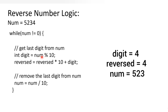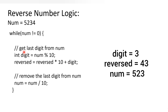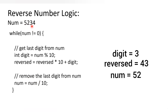523 is not equal to 0, so we go inside the loop again. 523 modulus 10 gives us the remainder, which is 3, so digit is now 3. Reversed already has 4, so 4 into 10 is 40, plus 3 gives us 43. Now we have the reversed number as 43.